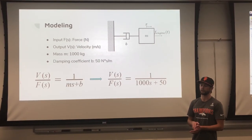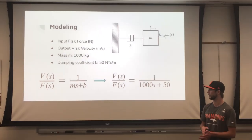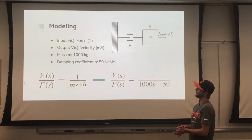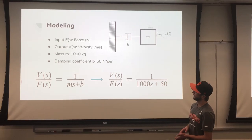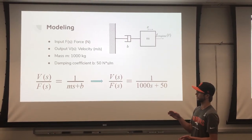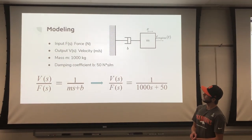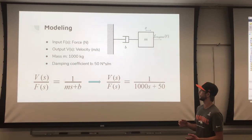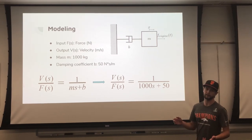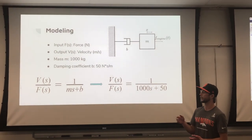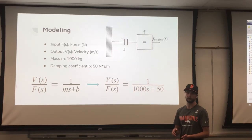We solved the transfer function in terms of force of the engine to position of the vehicle and got 1 over ms squared plus bs. We derived this to get the transfer function for velocity over force, shown as 1 over ms plus b. Then we inserted values for our damping coefficient and mass. For damping, we estimated 50 newtons times second per meter for air resistance, and for mass we used 1,000 kilograms.